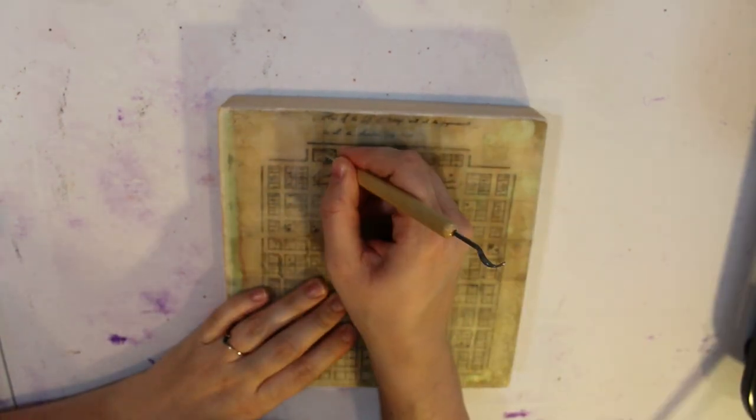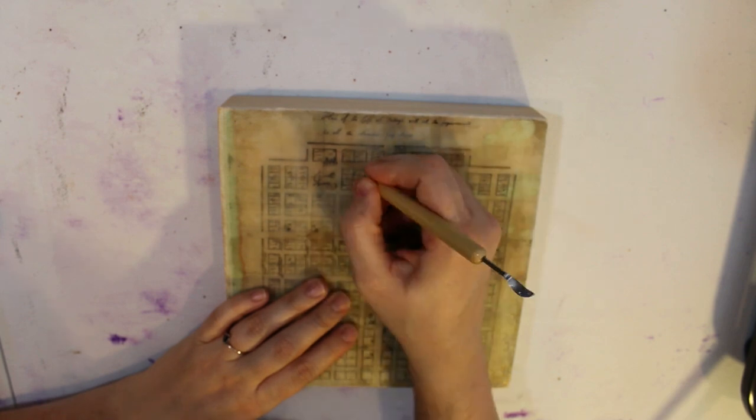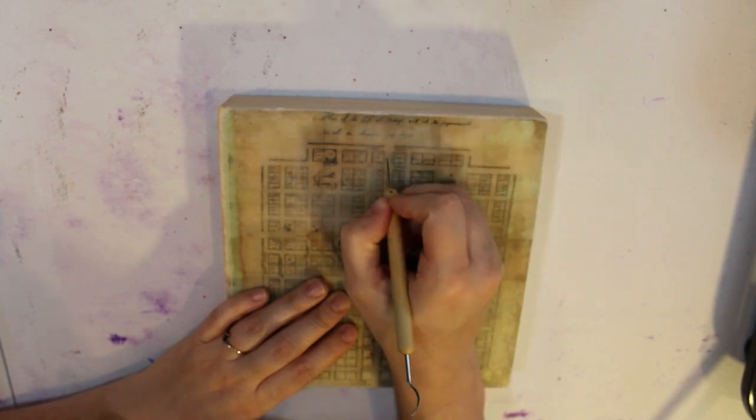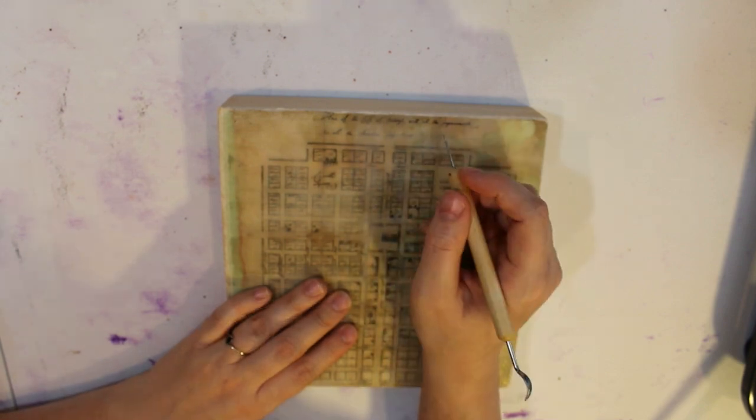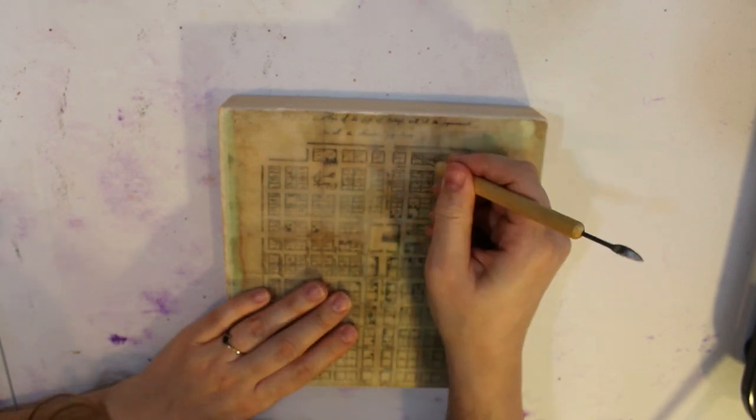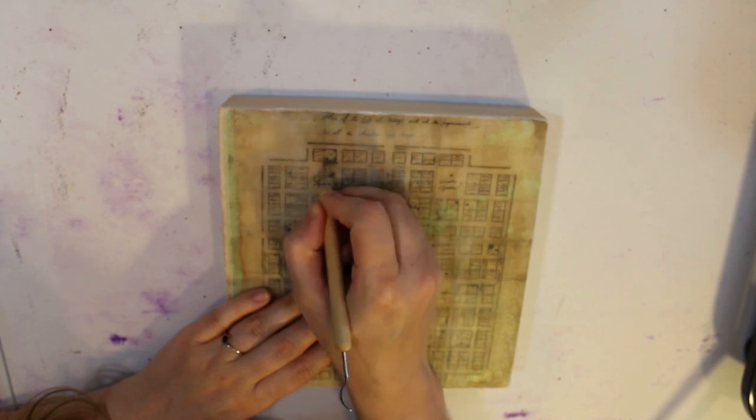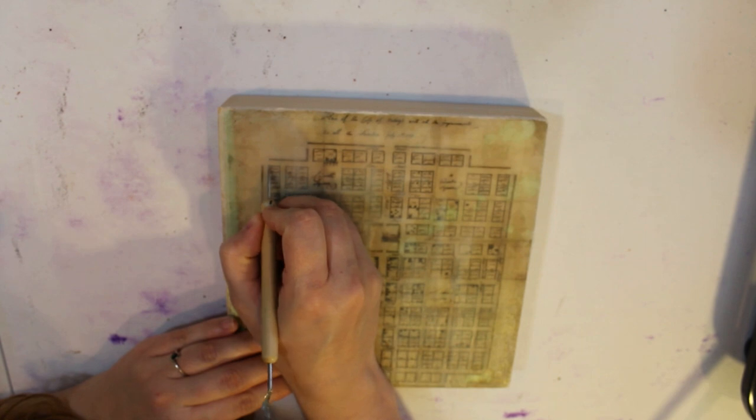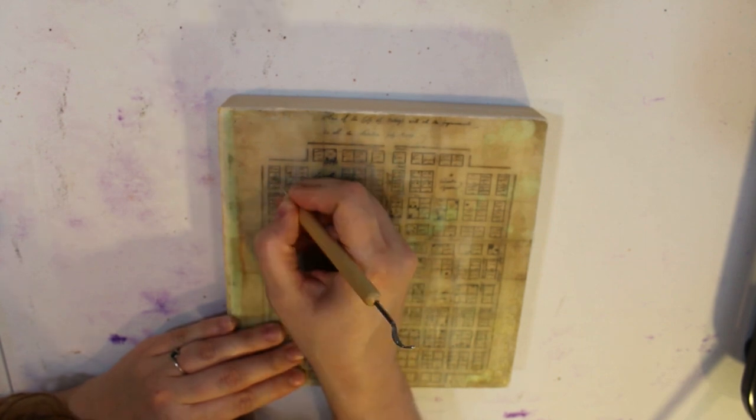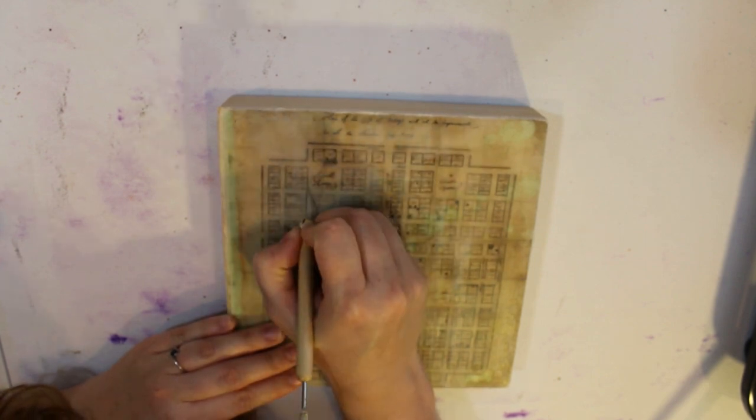So now I'm using one of my clay tools to go over the blocks in this map. What I want to do is create little incised lines that I'm going to be filling with oil paint so that the blocks in this map kind of stand out through the layers of wax, because I'm going to be adding more and more layers.